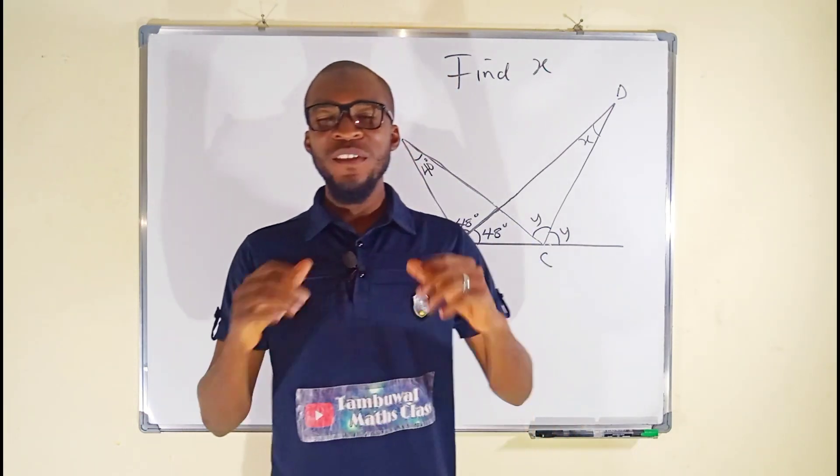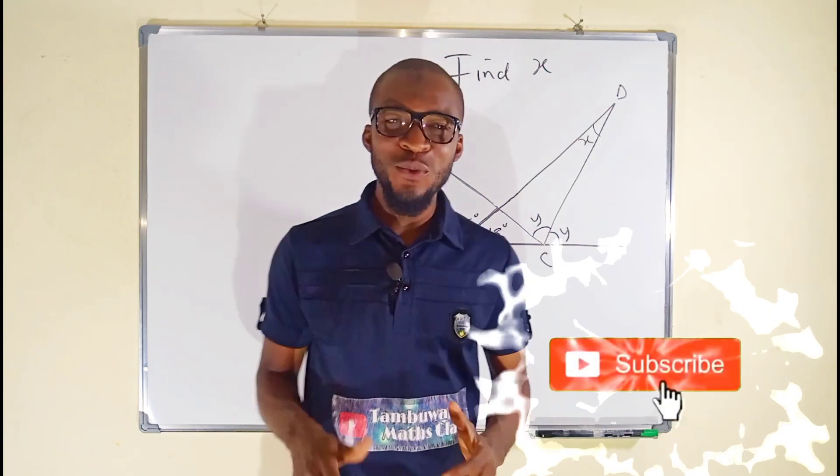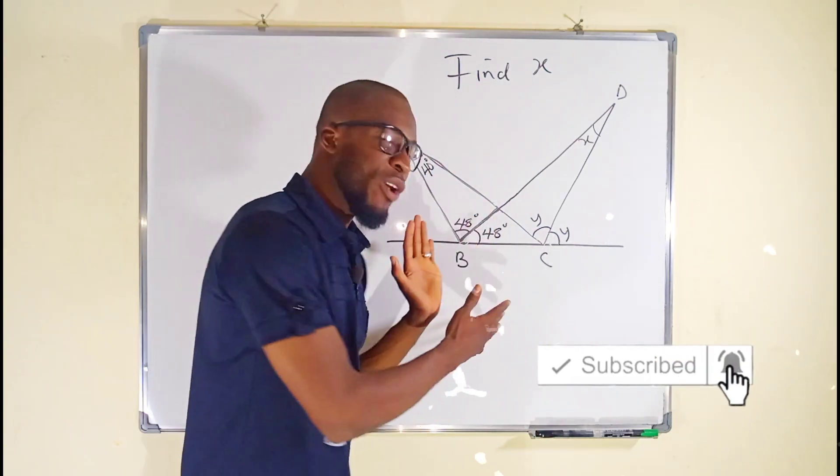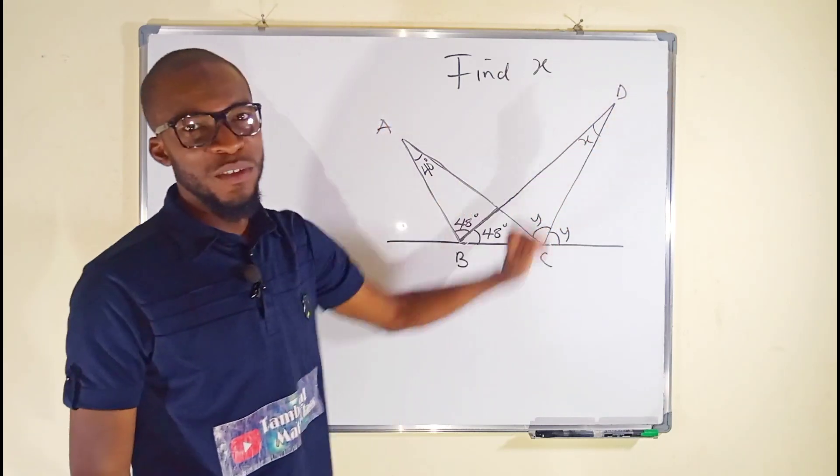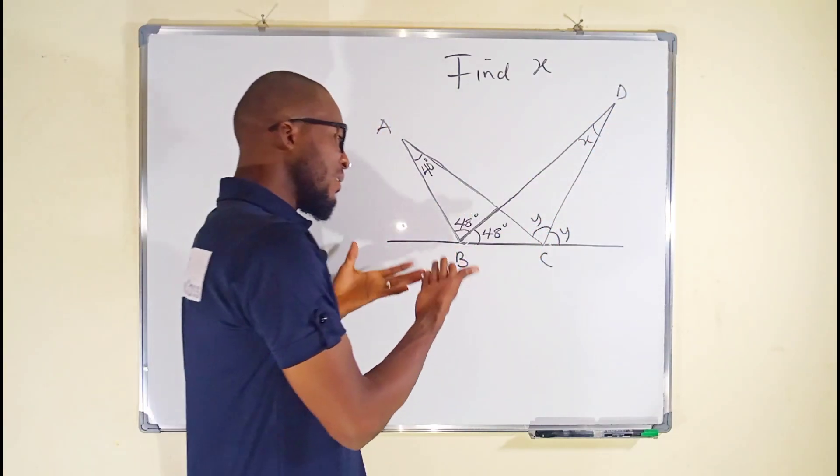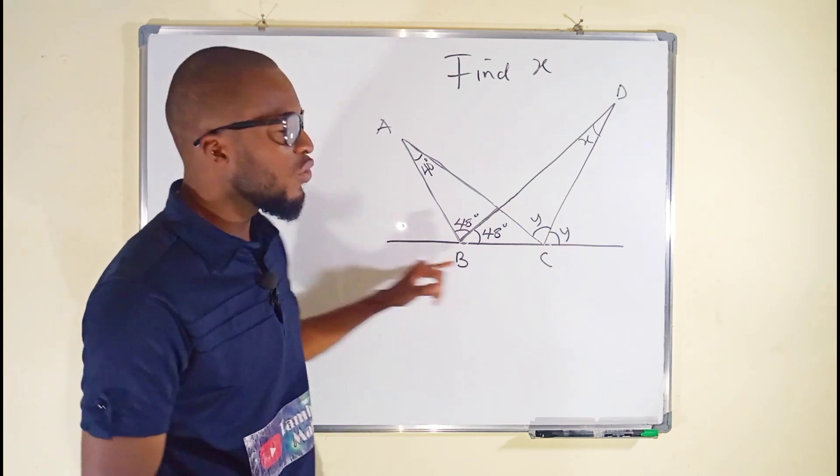Hello, good morning viewers. In this tutorial we are going to find a solution to this geometry question in which we are asked to find angle x. Looking at this diagram, you see we have a straight line in which two other triangles lie on.